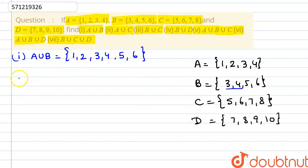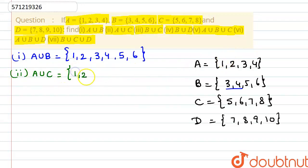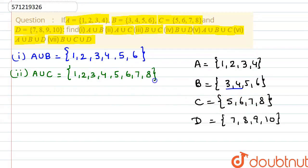Now we have to find the second part, A union C. Similarly, A union C will first include A: {1, 2, 3, 4}, and then C: {5, 6, 7, 8}. Here no elements are repeating, so we can directly write all the values from both sets.